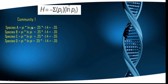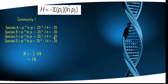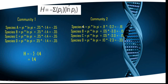For Community 1, pi was 0.25 and ln(pi) was −1.4 for each species, so pi × ln(pi) = −0.35 for each species. Summing all four gives −1.4. Multiplying by minus one gives H = 1.4. So the Shannon Diversity Index for Community 1 is 1.4.